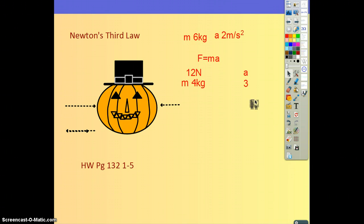Number 2. A child causes a wagon to accelerate by pulling with a horizontal force. Newton's third law says that the wagon exerts an equal and opposite force on the child. How can the wagon possibly accelerate? It says, draw a diagram to help you out.